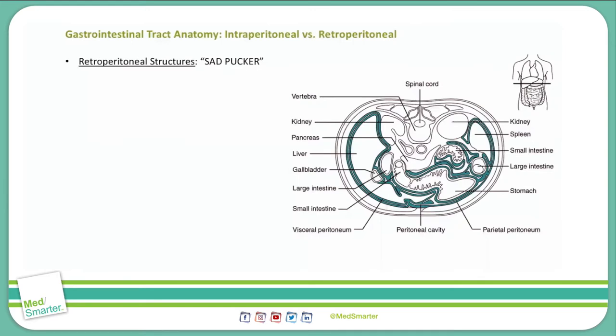We typically discuss structures as being either intraperitoneal or retroperitoneal, primarily because if a structure in one of these locations were to bleed or be injured, we know that free fluid or air would be present either within or behind the peritoneal cavity. The best approach is to memorize which structures are retroperitoneal, so that anything not on that list must be intraperitoneal.